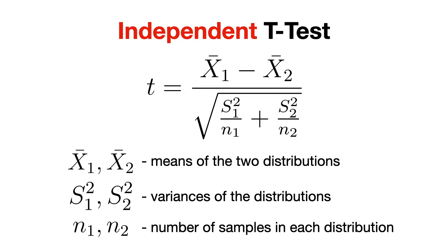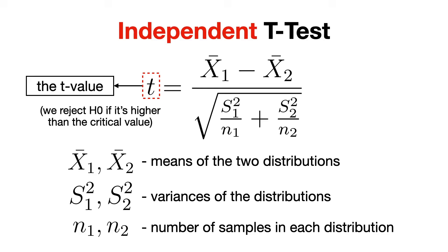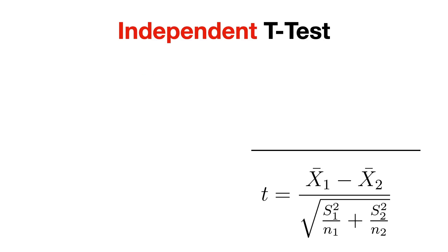Now, what we obtain after this calculation is called the t-value, and if it's greater than a predefined value called the critical value, then we reject the null hypothesis, which in our case would say that indeed the extra tutoring made a significant difference in the students' test scores.